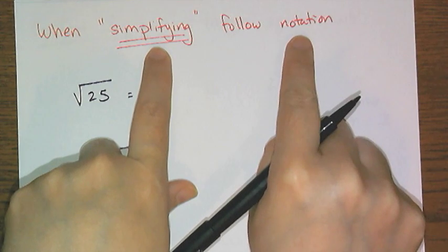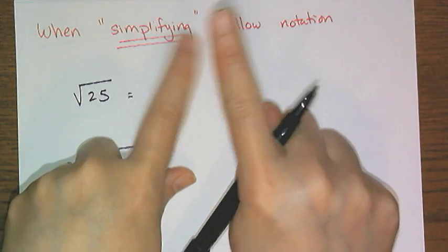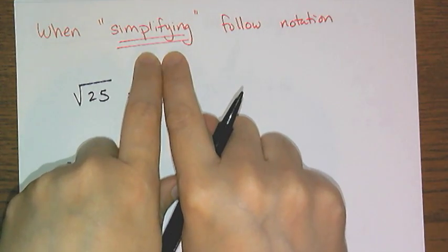So when you are simplifying, you follow the notation as it's written. Don't add pluses or minuses. Don't make a positive and negative or anything like that when you simplify. Simplify just means to simplify.